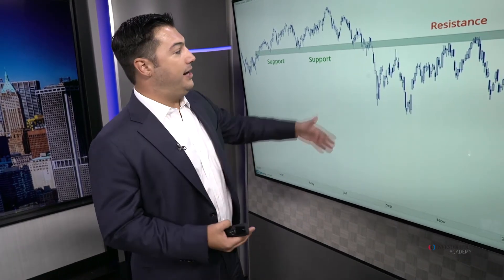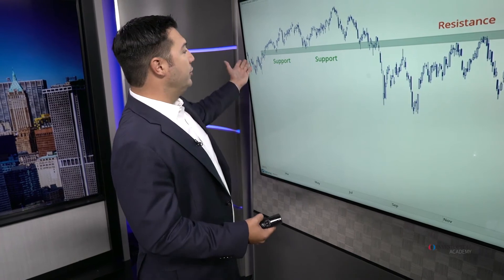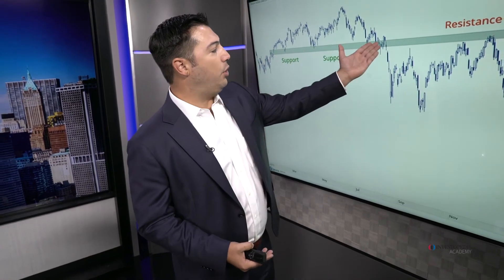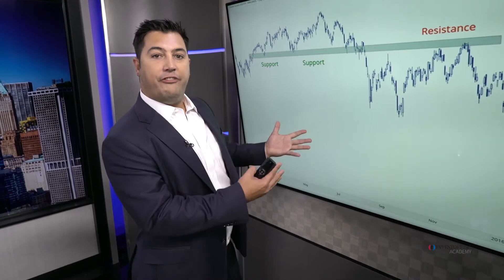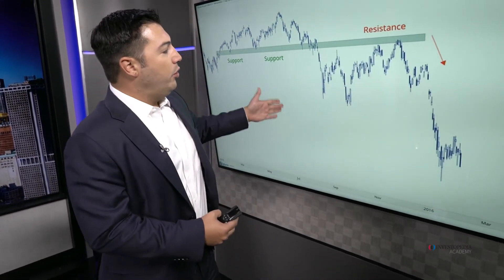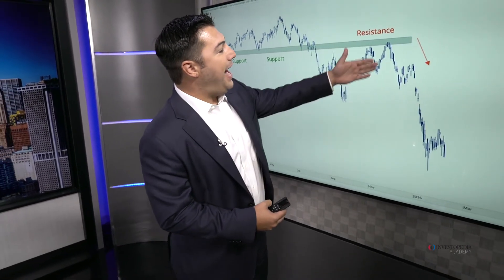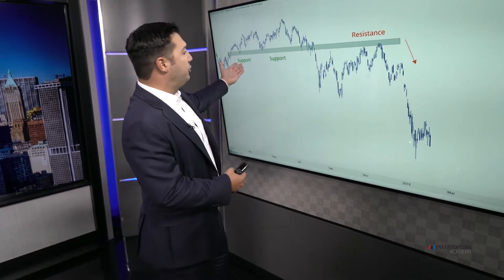The supply overwhelms demand and prices break down. Now that support is broken, the sellers are in control — this isn't opinion, this is fact. The sellers are now in control near that 120 level. Fast forward several months later when price kicks back to that former support, and of course it turns into resistance.